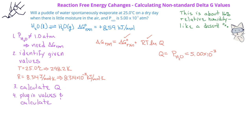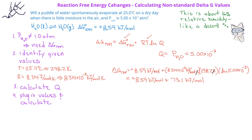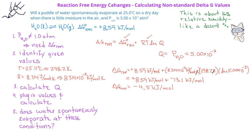We can now plug in the values and calculate delta G for the reaction. Delta G reaction equals 8.59 kJ/mol plus 8.314 times 10 to the negative third kJ per mole Kelvin, multiplied by 298.2 Kelvin, multiplied by the natural log of 5.00 times 10 to the negative 3. This gives 8.59 kJ/mol plus negative 13.1 kJ/mol, so the free energy change is negative 4.5 kilojoules per mole. Since the free energy change is negative, the evaporation of water on a dry day at 25 degrees Celsius is spontaneous, which agrees with our everyday experience.